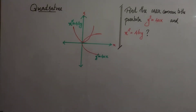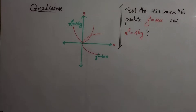Hello, welcome to my channel Speak with Math. Find the area common to the parabola y² = 4ax and x² = 4by. This problem belongs to the topic quadrature.